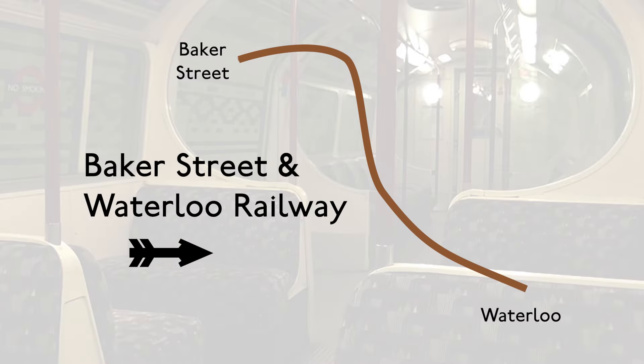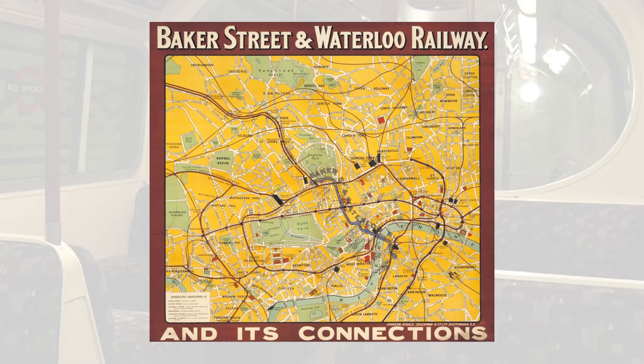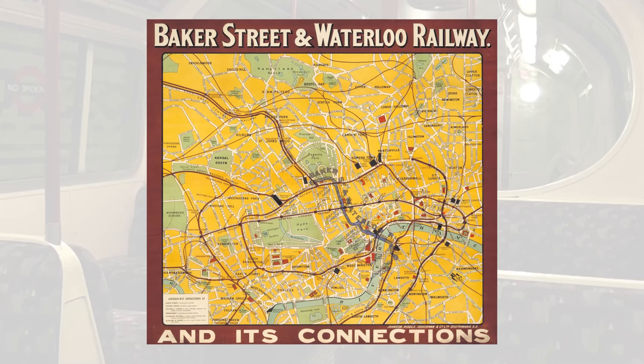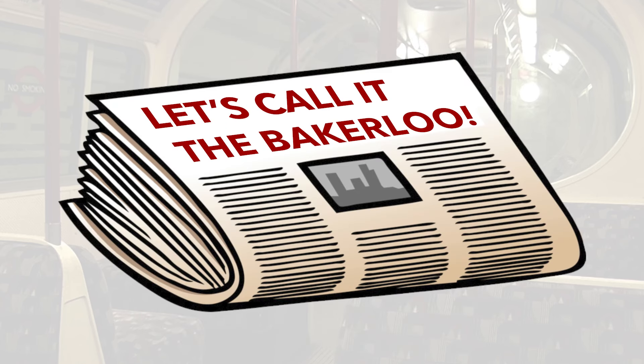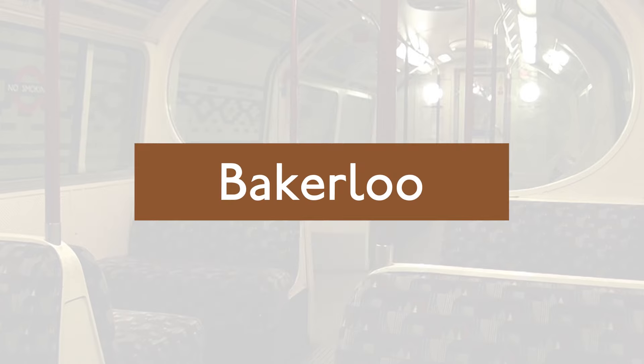In 1906, the Bakerloo Line was built, originally called the Baker Street and Waterloo Railway after the two stops it ran between. Baker Street was actually named after William Baker, an 18th century builder, and Waterloo of course being named after the famous Battle. But the lengthy name soon got abbreviated, especially in the London press where newspapers started to use the word Bakerloo instead, and that name fell into common use.